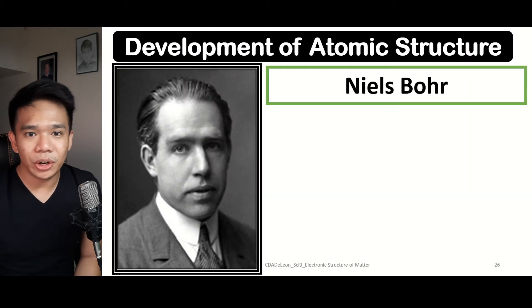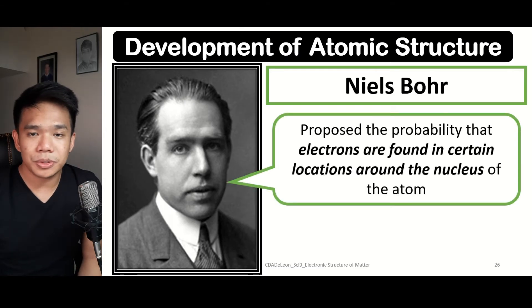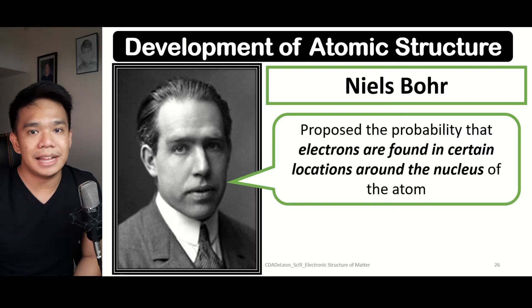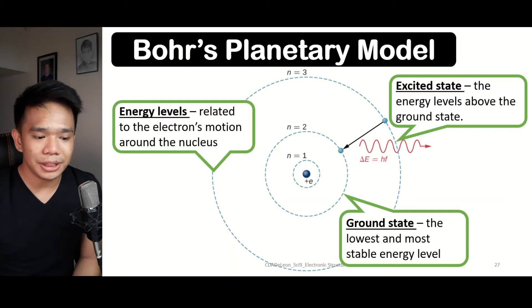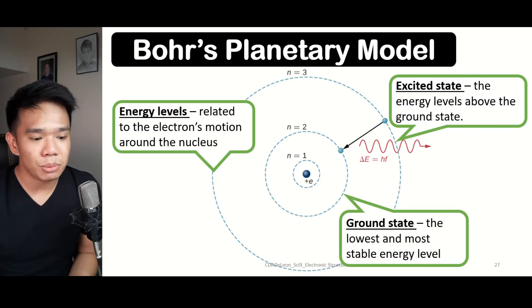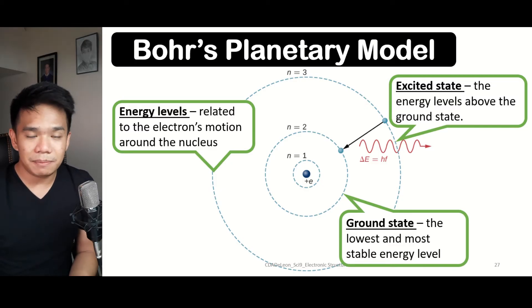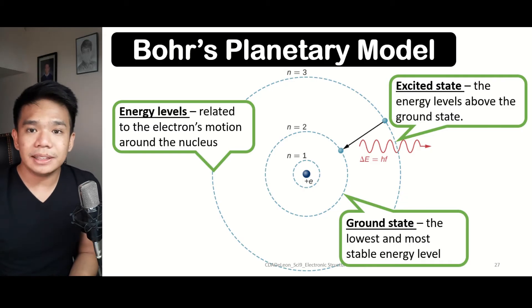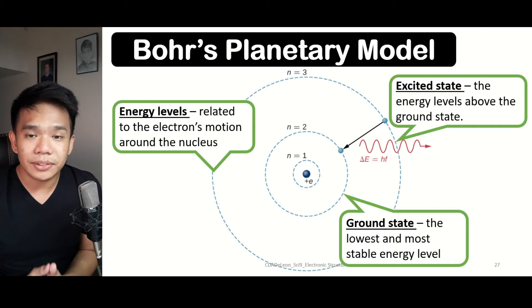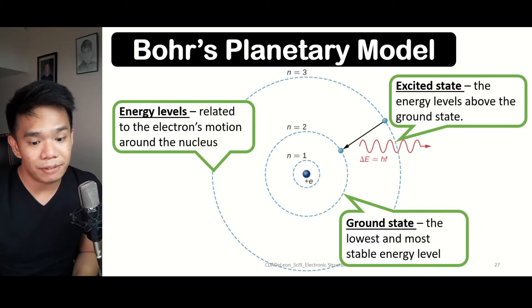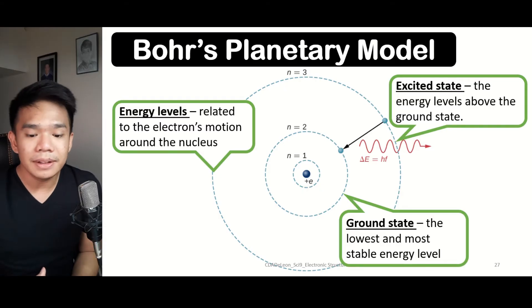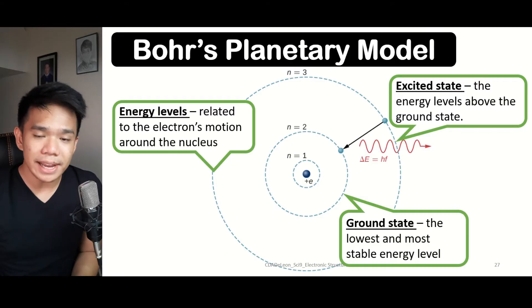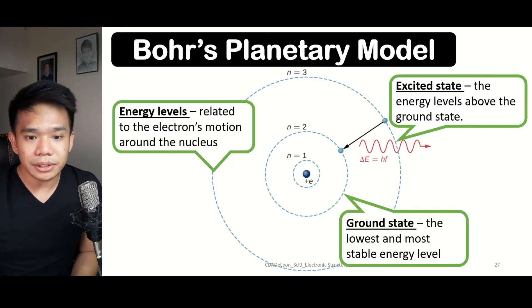The first one is Niels Bohr. He proposed that there's a probability that electrons can be found within certain locations around the nucleus of the atom, known as his planetary model of the atom. There are three different features of Bohr's planetary model. First, we have energy levels, which are related to the motion of the electron around the nucleus. The ground state refers to the lowest and most stable energy level, and the excited state refers to energy levels that are above the ground state. When an electron transfers from the ground state to the excited state, they tend to release energy.